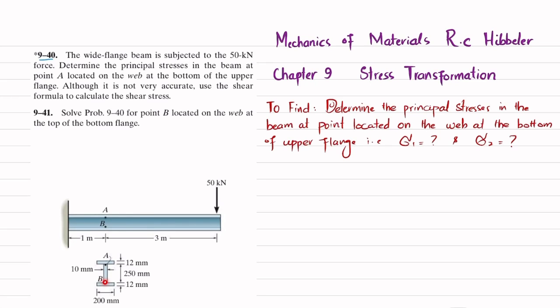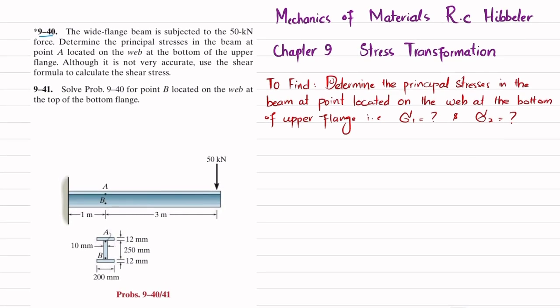We want to find sigma 1 and sigma 2. Let's start with the solution. The first step is to find the state of stress at point B. For that, we will cut the beam at section AA and draw the free body diagram.